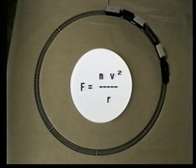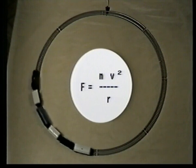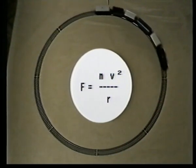For an object of mass m to move at speed v in a circle of radius r, a force of size mv squared over r must be provided towards the center.